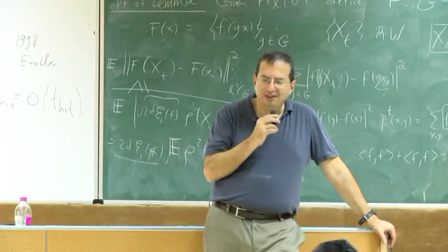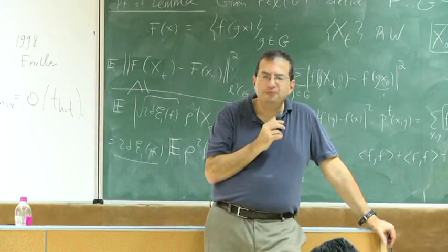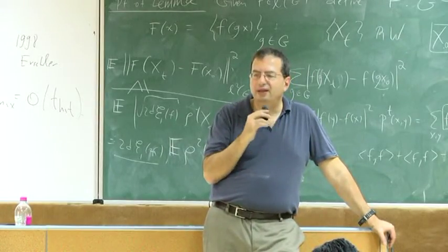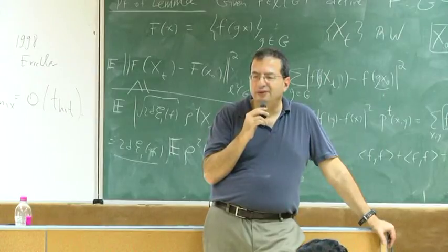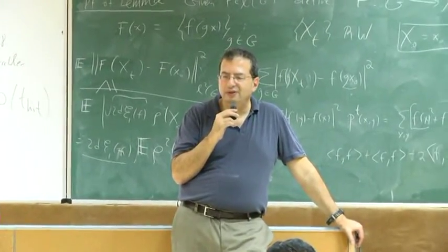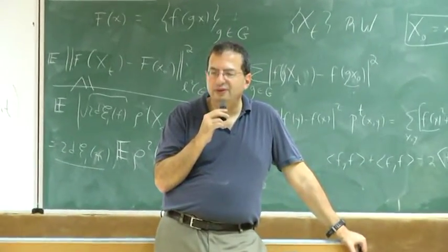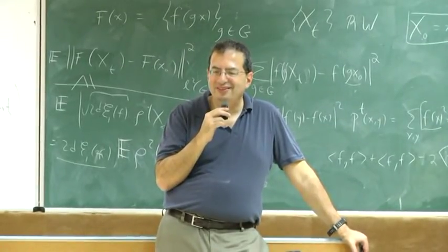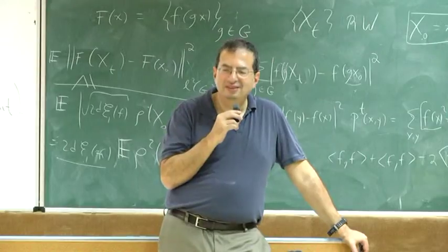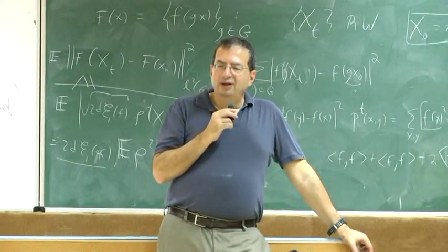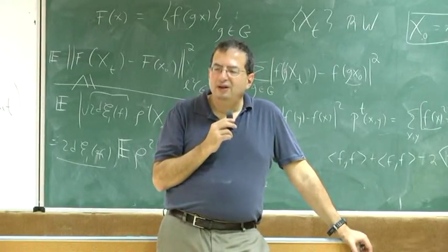Two questions: is there a reason why epsilon equals one quarter is the convention for T_mix? And is epsilon always taken to be independent of time?